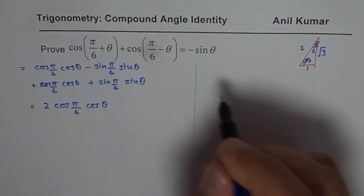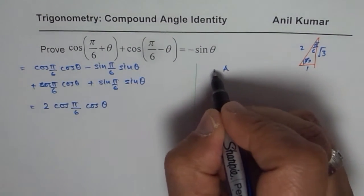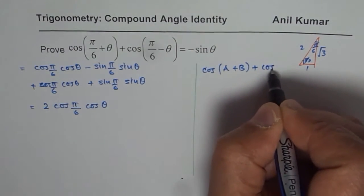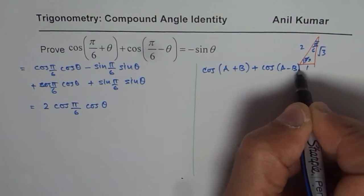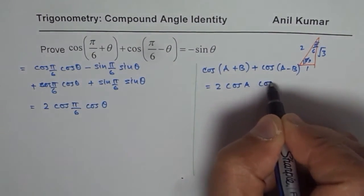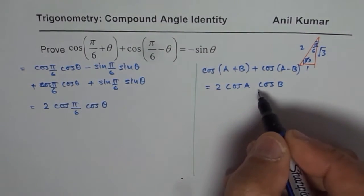The alternate method uses the formula: cos of A plus B plus cos of A minus B equals 2 times cos A cos B. You could directly use this formula.